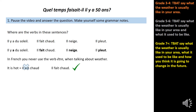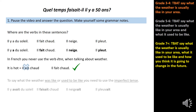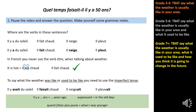They're all present tense. Notice that in French you never use the verb être when talking about the weather — so it's not il est chaud, the correct form is il fait chaud. To say what the weather was like or used to be like, you need to use the imperfect tense. Il y a du soleil becomes il y avait du soleil. Il fait chaud becomes il faisait chaud. Il neige becomes il neigeait. And il pleut becomes il pleuvait. Useful past time phrases: il y a cinquante ans (50 years ago), il y a vingt ans (20 years ago), auparavant (in the old days), and quand j'étais plus jeune (when I was younger).